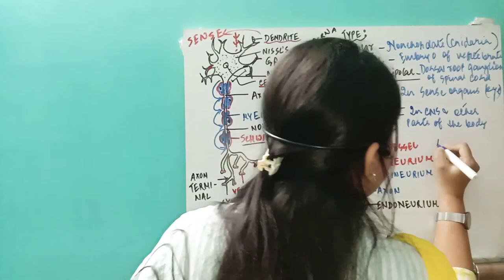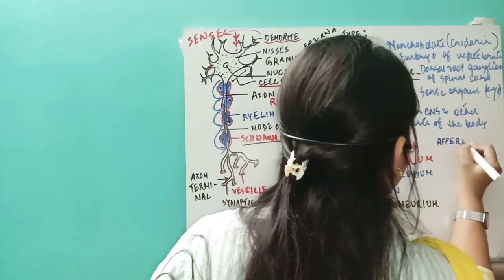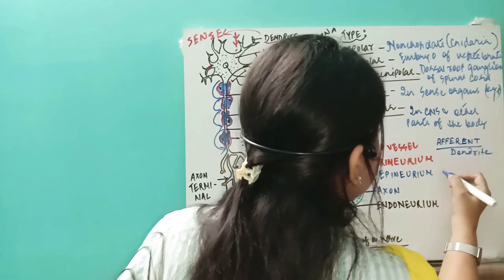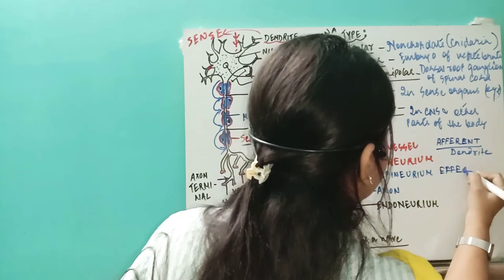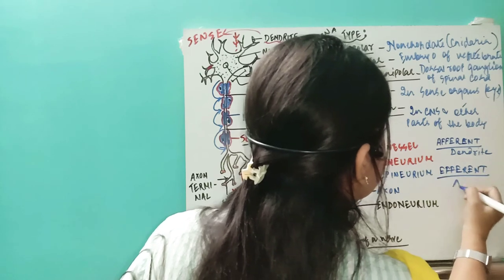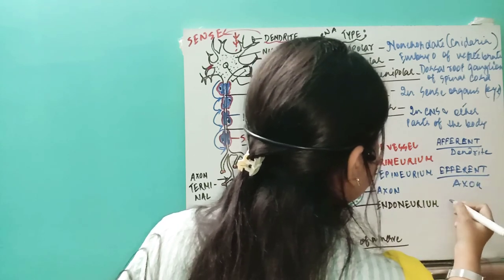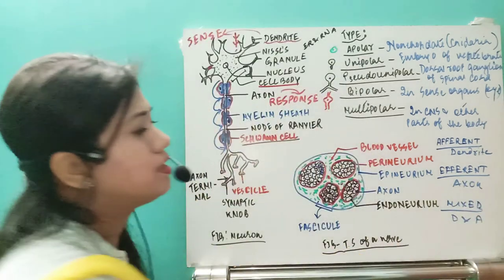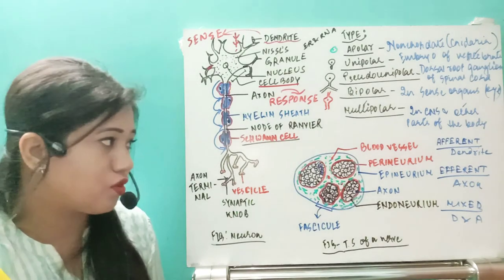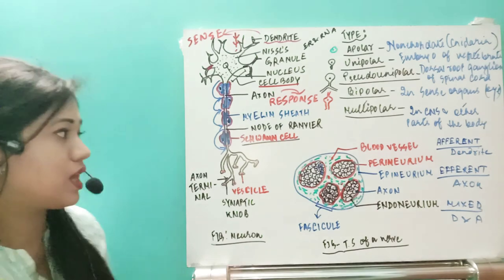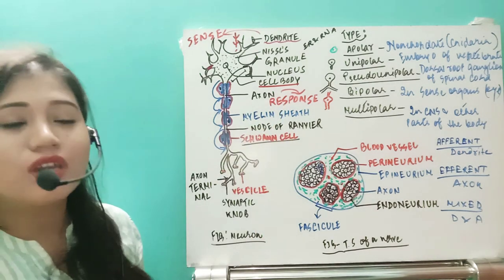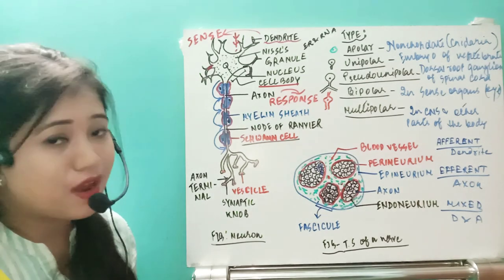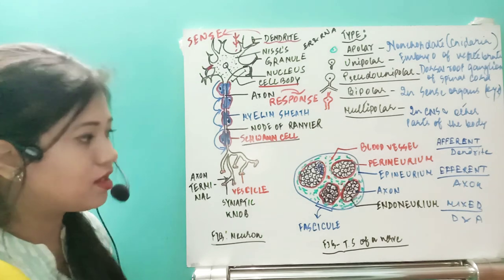So the nerve can be of three types: afferent nerve, which is made up of dendrites and carries sensory information; efferent nerve, which is made up of axons and carries responses; and mixed nerve, which is made up of both axons and dendrites.